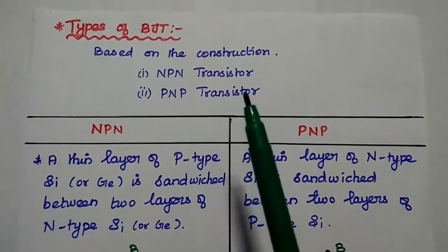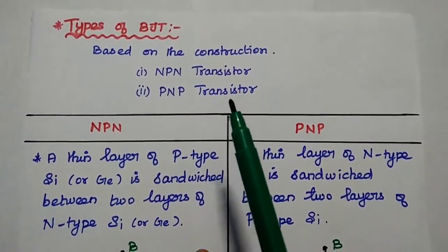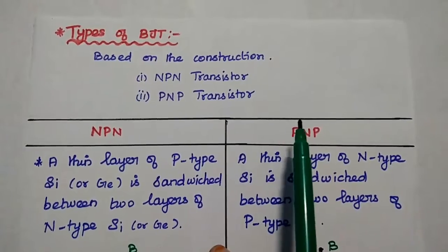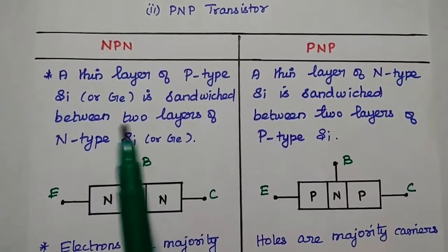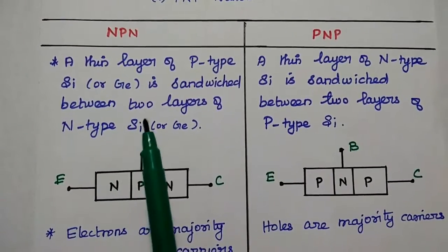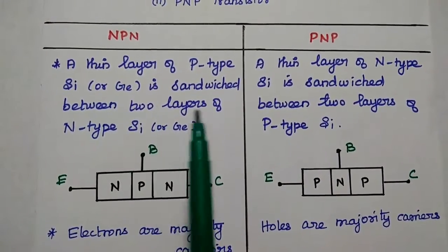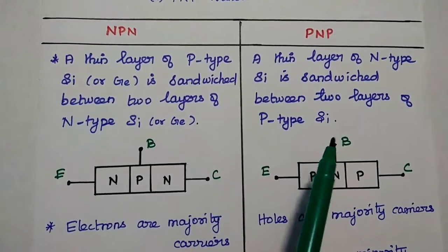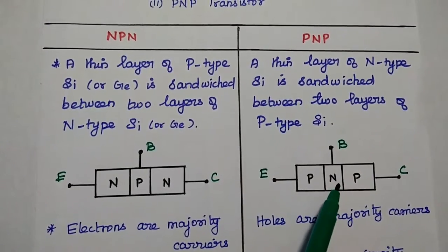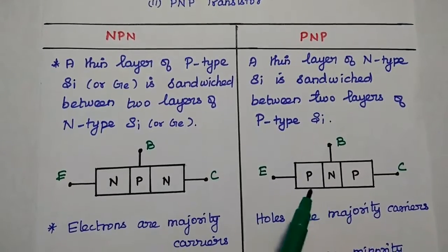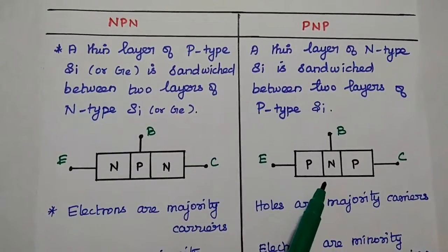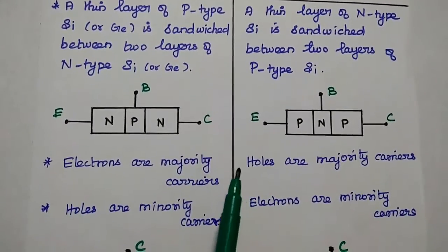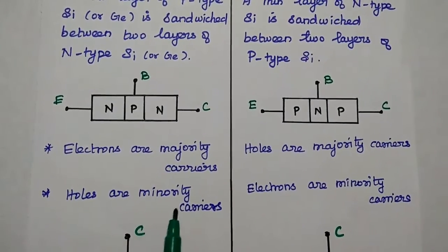Based on the construction, there are two types of transistors available: NPN transistor and PNP transistor. In NPN transistor, a thin layer of P-type silicon or germanium material is sandwiched between two N-type layers. In PNP, a thin layer of N-type silicon or germanium material is sandwiched between two P-type layers. In NPN, electrons are the majority carriers and holes are the minority carriers.